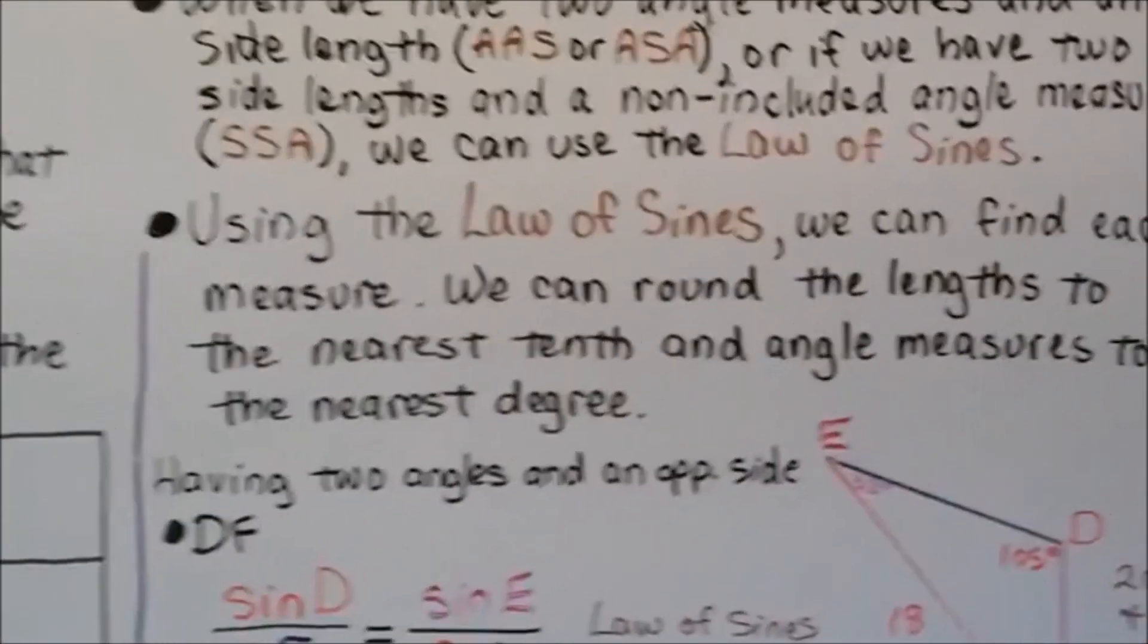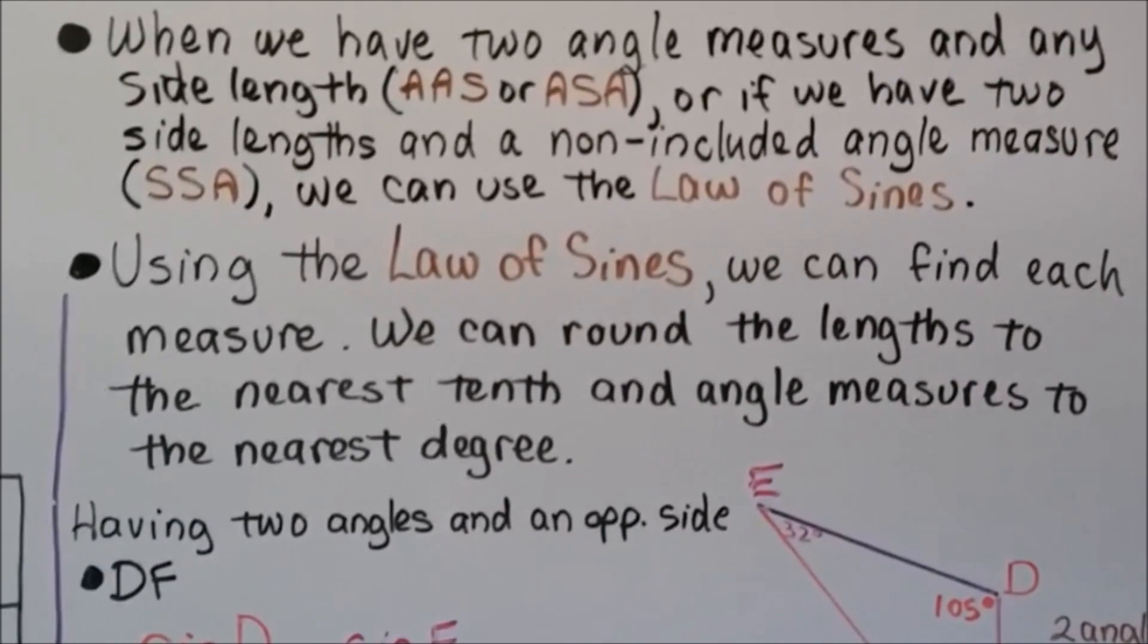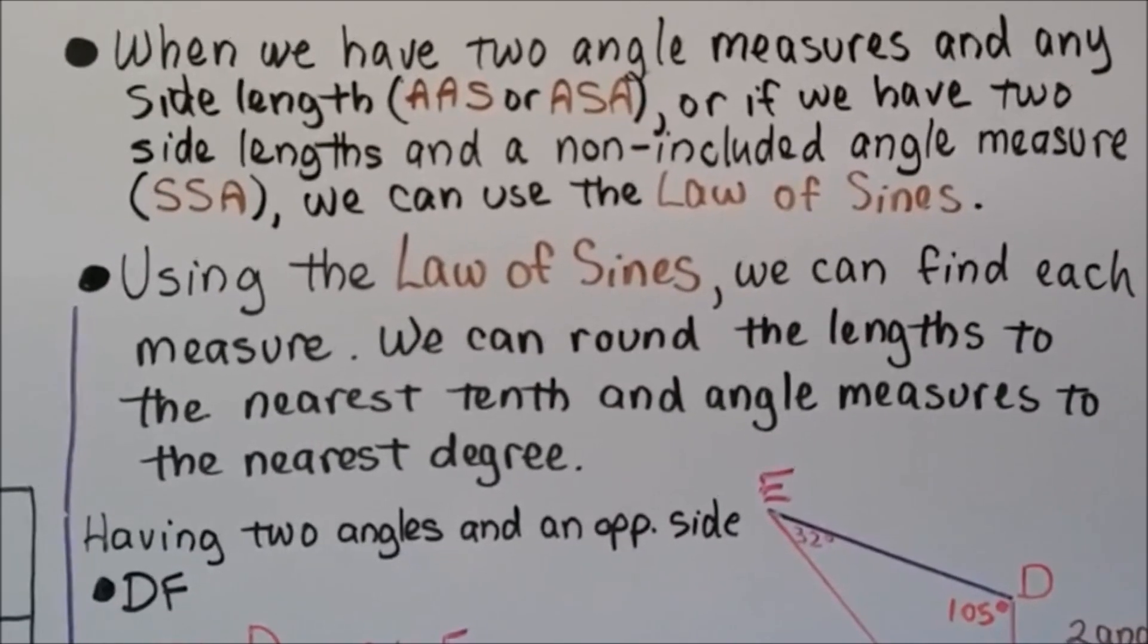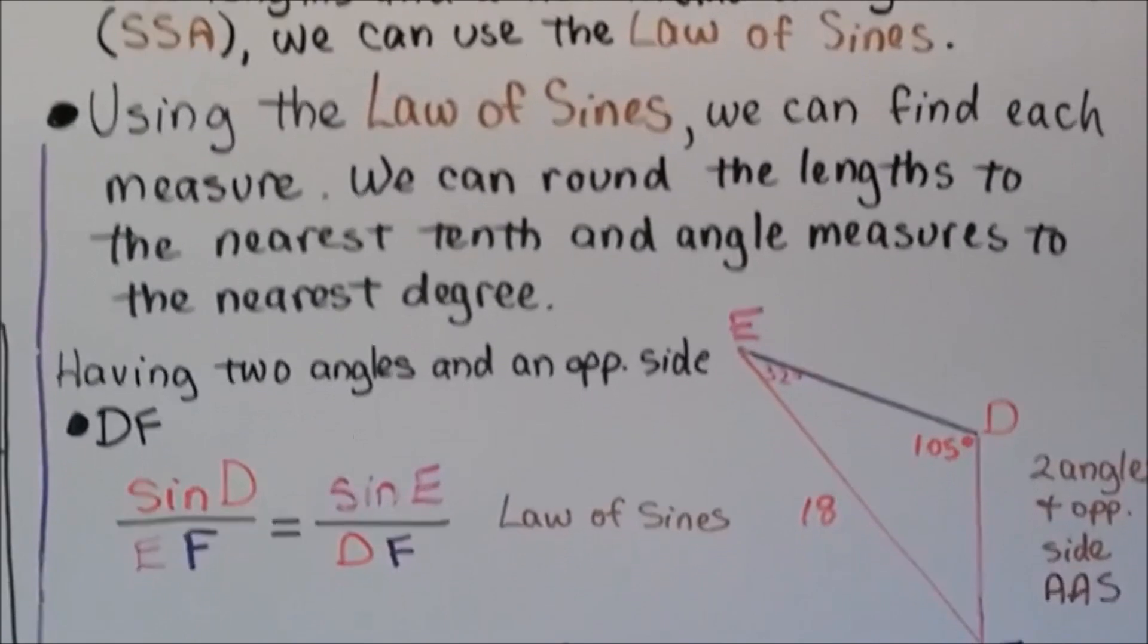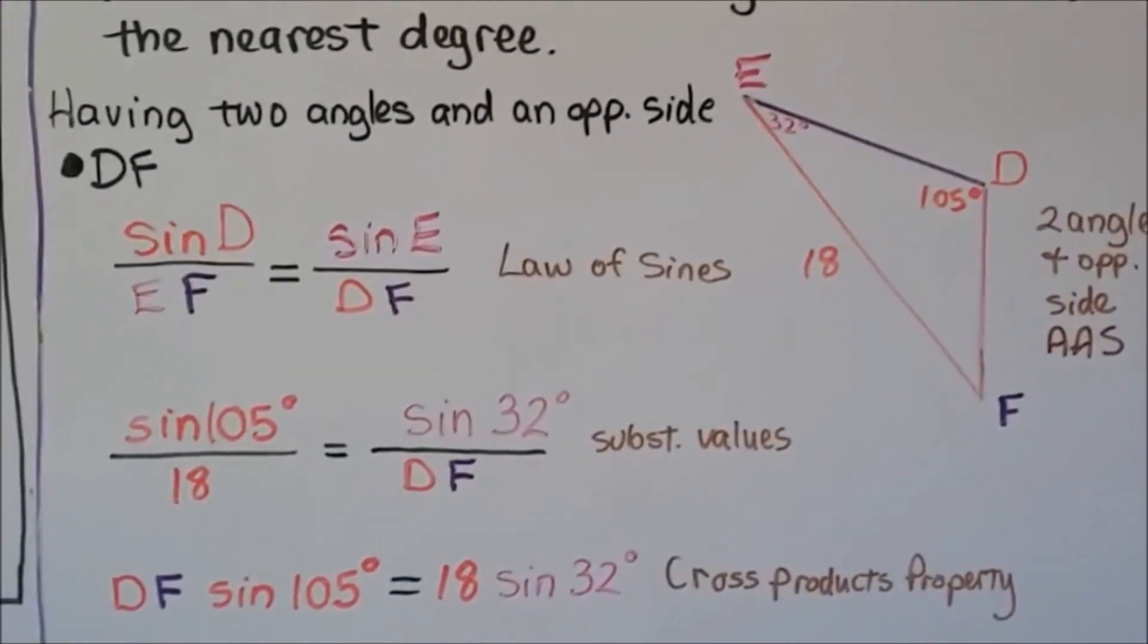When we have two angle measures and any side length, AAS or ASA, or if we have two side lengths and a non-included angle measure, SSA, we can use the law of sines. Using the law of sines, we can find each measure. We can round the lengths to the nearest tenth and angle measures to the nearest degree.